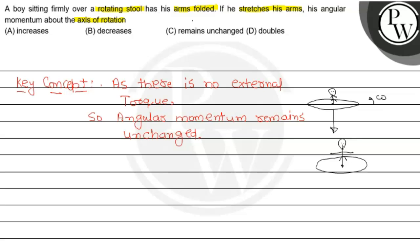As we know that tau external equals zero, then delta L equals zero, and the change in angular momentum will be zero. So L initial will be equal to L final. Therefore option C is correct. Hope you all get it — thank you, all the best.